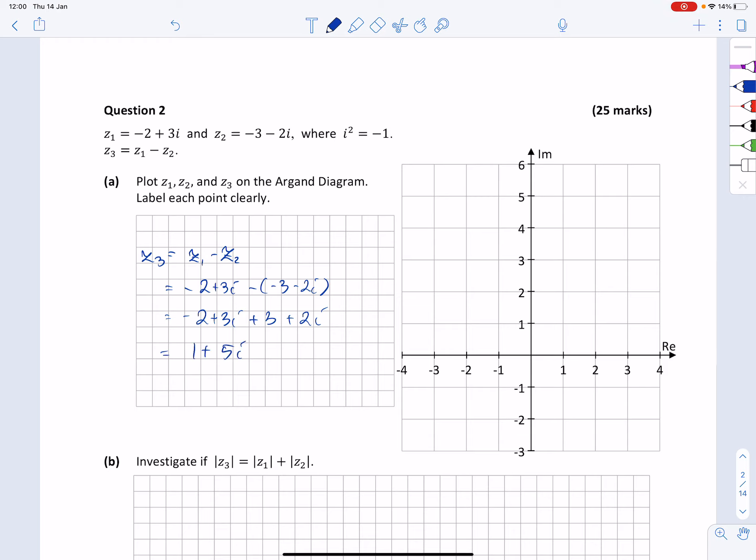So now I can plot the three numbers using the red pen. Z1 is minus 2 plus 3i, minus 2 along the real, plus 3 along the imaginary axis, so that's Z1. Z2 is minus 3 minus 2i, so minus 3 along the real axis, minus 2 along the imaginary. Obviously, it has to be 1 further, minus 3, so that's Z2.